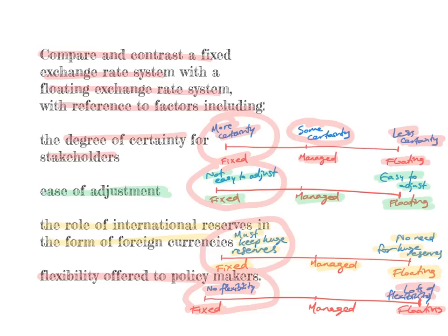A floating exchange rate system, on the other hand, gives the economy ease of adjustment to external shocks, requires no huge reserves, and provides lots of policy flexibility — but the trade-off is much less certainty and much more room for speculation. Viewing these as a spectrum can help you understand the concepts.